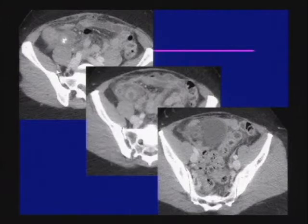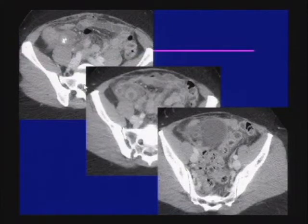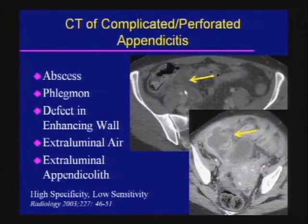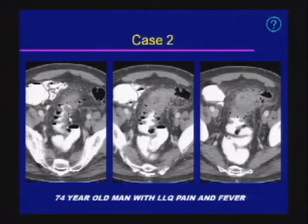In a more complicated case of appendicitis, as it becomes more complex with collections, it may be hard to find the appendix. When there are large collections in the pelvis, these patients often do not go to surgery but rather get drained by interventional radiology. Signs of complicated or perforated appendix include discontinuity of the wall in frank perforation and a rim-enhancing collection consistent with abscess. Multiple findings together increase confidence significantly.